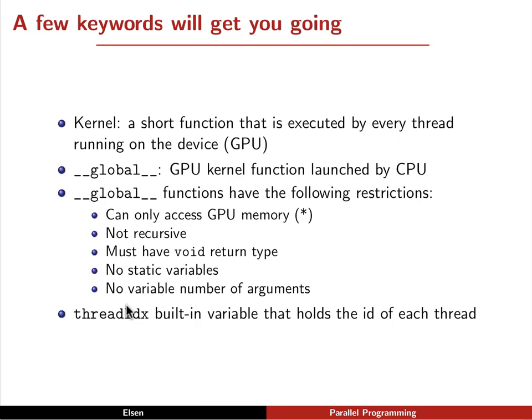So as a recap, the kernel is just a short function that is executed by every thread on the device. Usually when we say kernel, we really mean a global function. So a function preceded by that global keyword that tells the compiler this is a function that is launched on the GPU by the CPU. For reference, a couple of restrictions that global functions have compared with normal functions. As we talked about already, they can only access GPU memory with a small caveat. They're not recursive. You can't recursively call these functions. They have to have a return type of void. It's unclear what it would mean if you had many threads and they were each trying to return a value, what value you should return from this function. So the problem is solved by having nothing returned from the function. These functions also can't have static variables and they can't have a variable number of arguments. And finally, as we saw, threadIdx is a built-in variable that holds the ID of each thread.